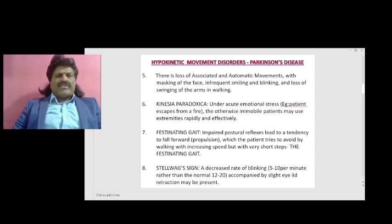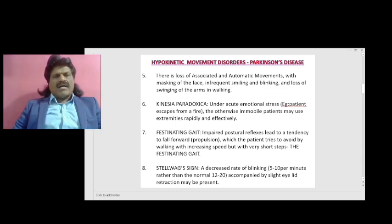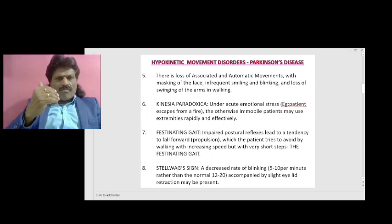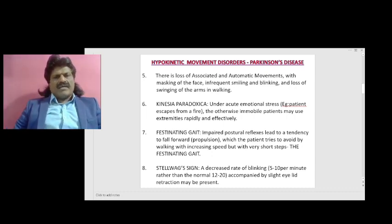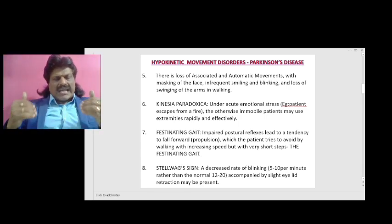There is a very interesting phenomenon known as kinesia paradoxica. Under acute emotional stress — for example, when a patient escapes from a fire — the otherwise immobile patient may use their extremities rapidly and effectively.